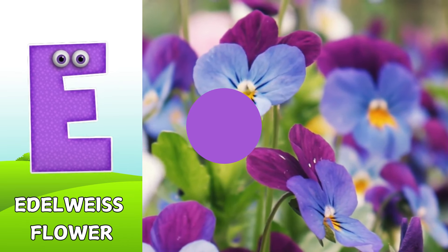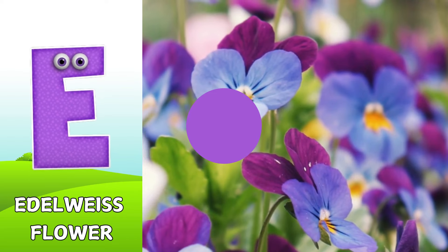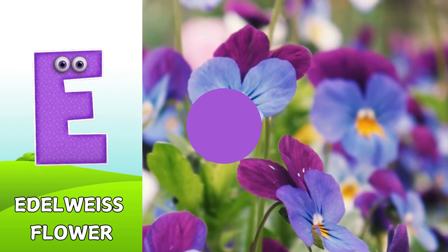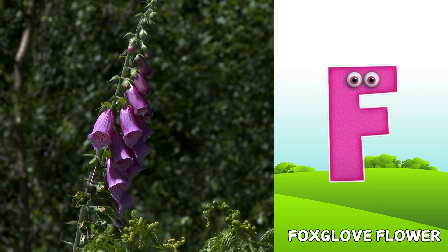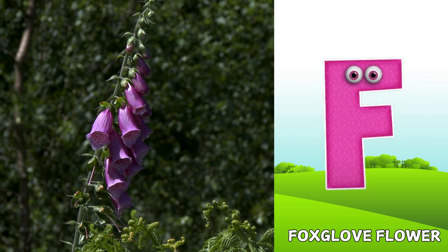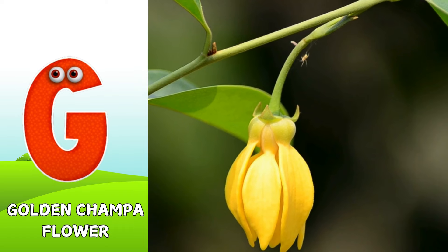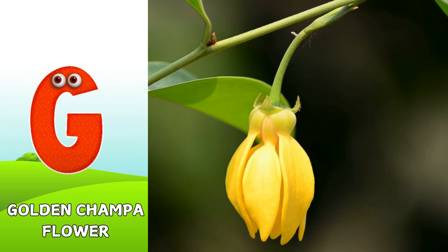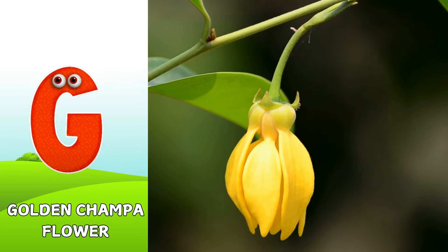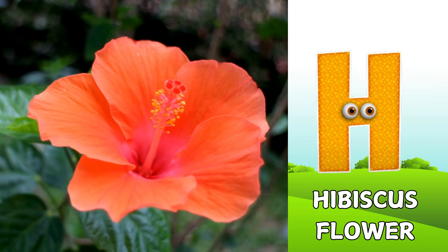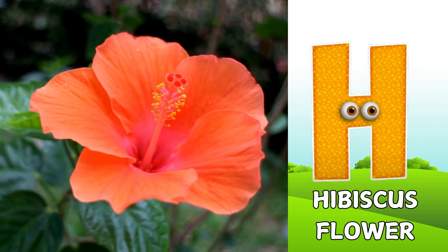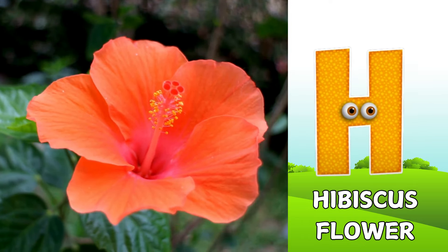E is for Edelweiss flower. E, E, Edelweiss flower. F is for Foxglove flower. F, F, Foxglove flower. G is for Golden Champa flower. G, G, Golden Champa flower. H is for Hibiscus flower. H, H, Hibiscus flower.